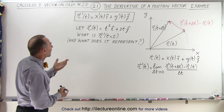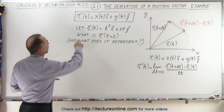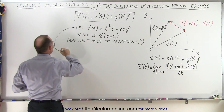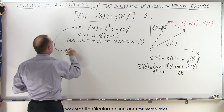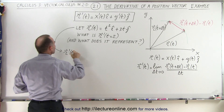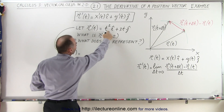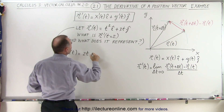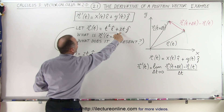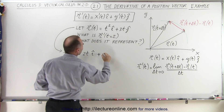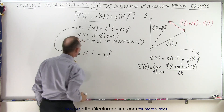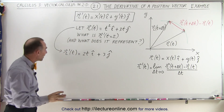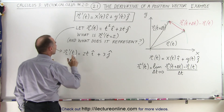So let's go ahead and first find the derivative of this position vector. So r prime of t is equal to the derivative of the x component, which would be 2t in the i direction, plus the derivative of the y component, which is 3 in the j direction. And now we're going to evaluate that for a particular t.